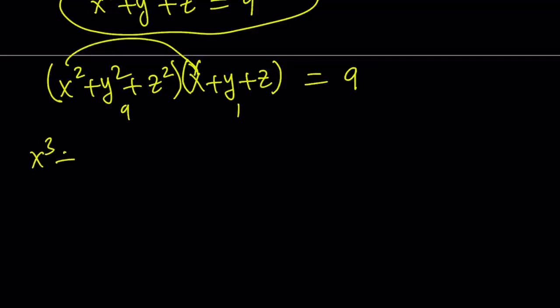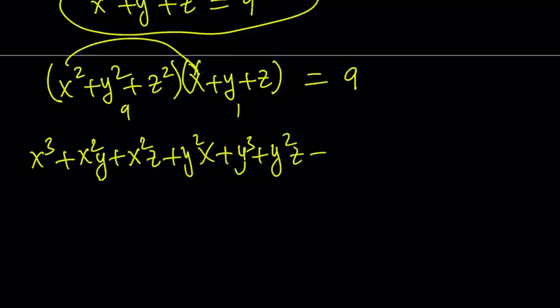So I get x cubed plus x squared y plus x squared z and then y squared x plus y cubed plus y squared z, and then finally z squared x plus z squared y plus z cubed, and it's equal to 9.